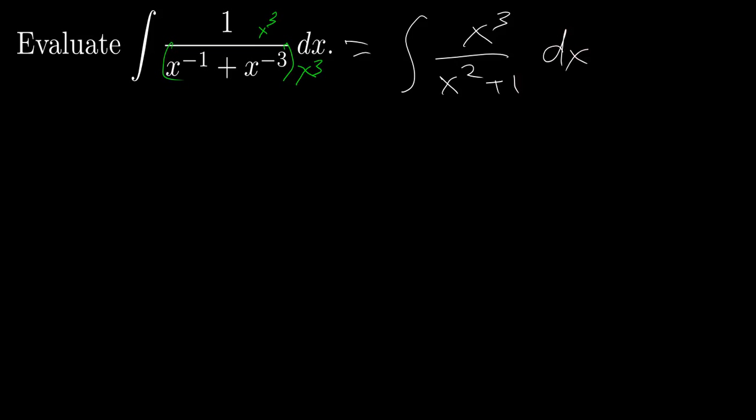Now I can do u-substitution, letting u be the denominator x squared plus 1, so that my du is 2x dx. And I want to substitute in 2x dx for du.